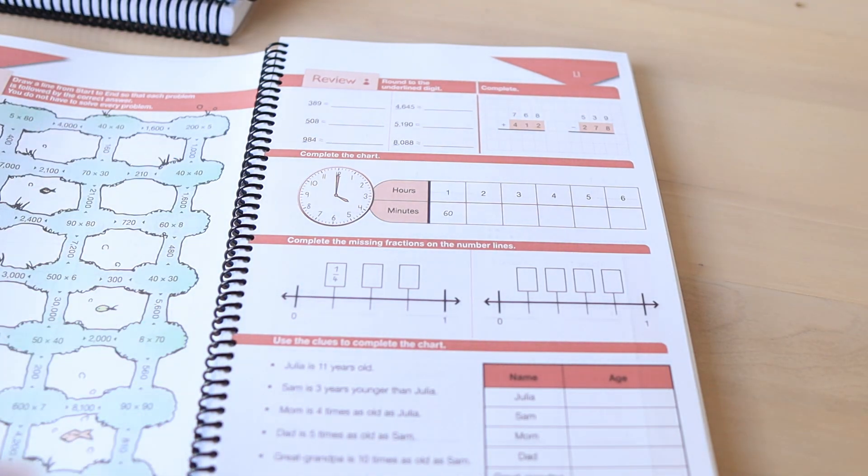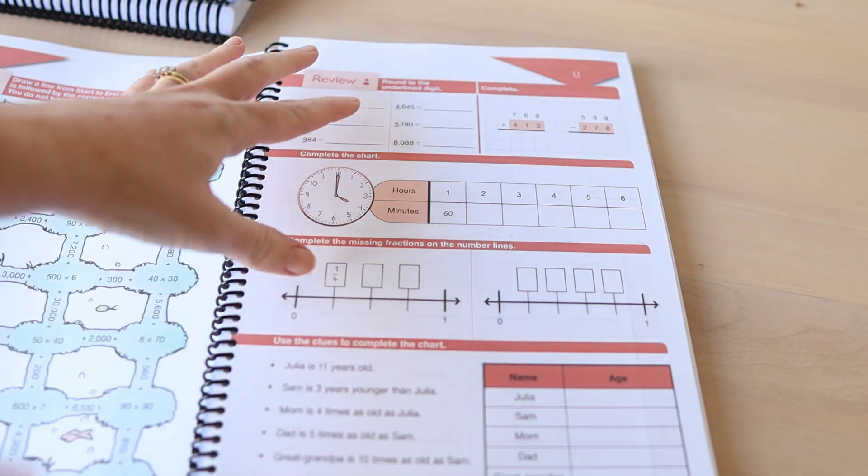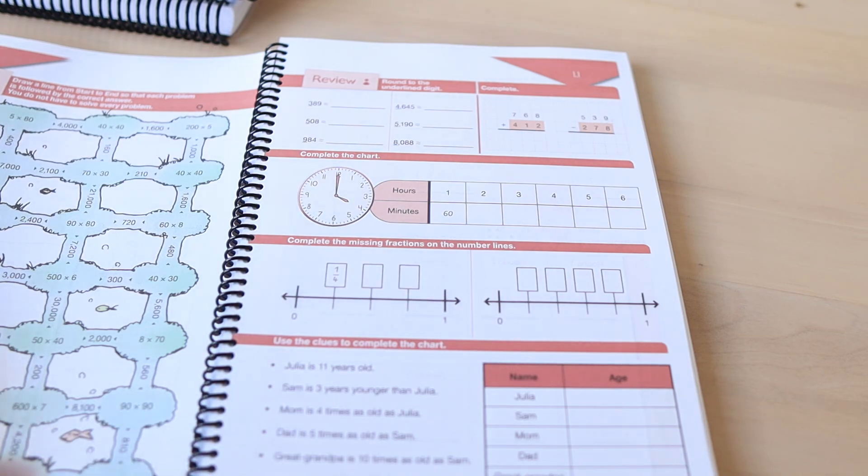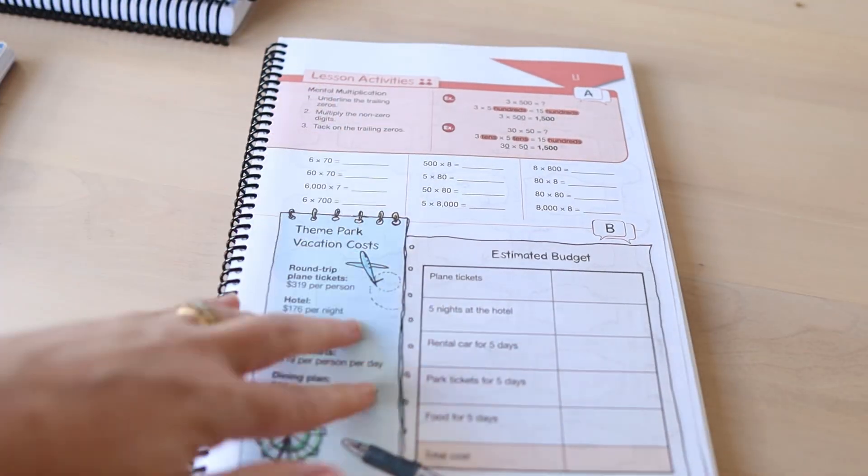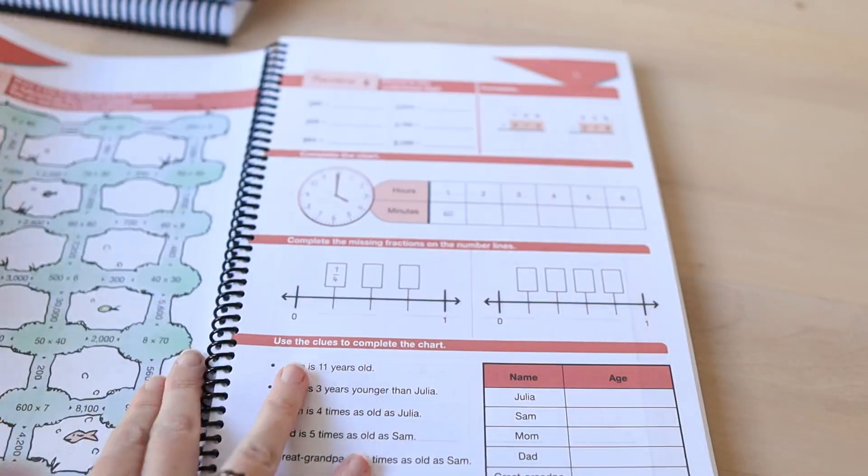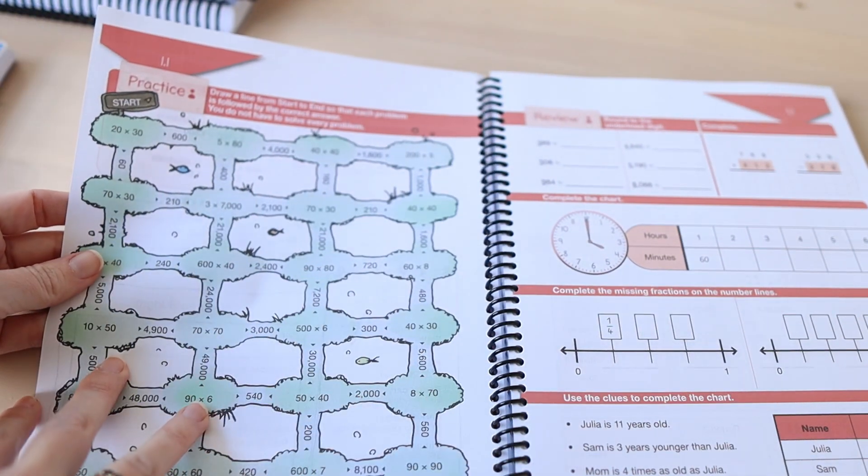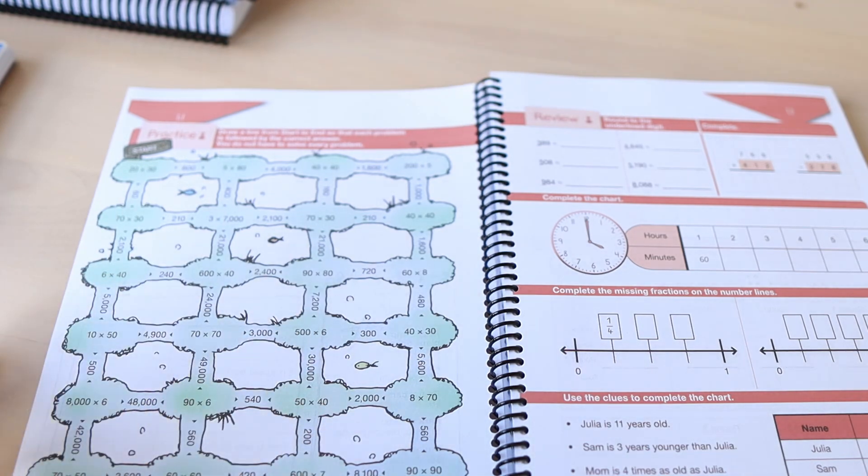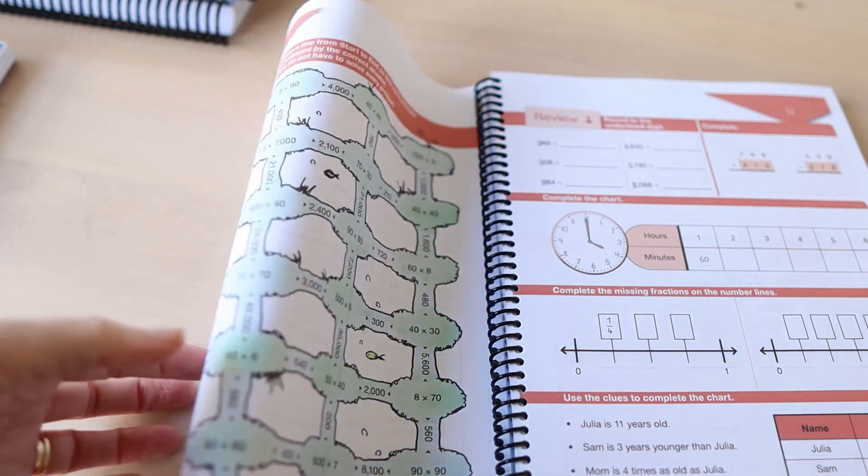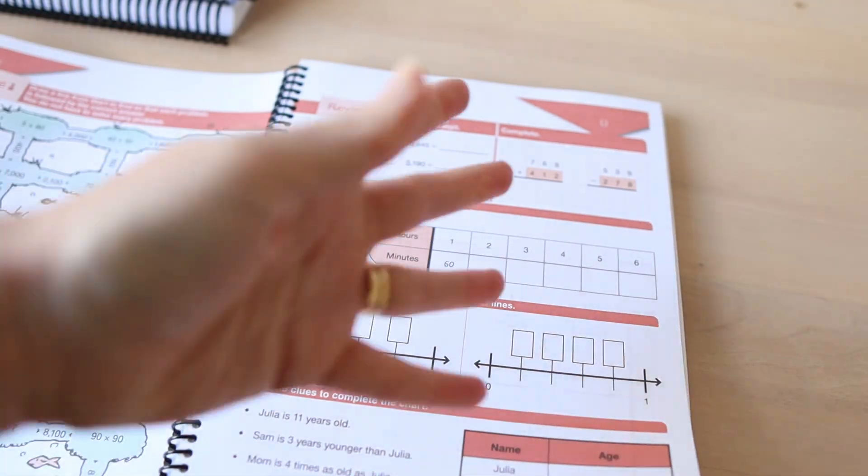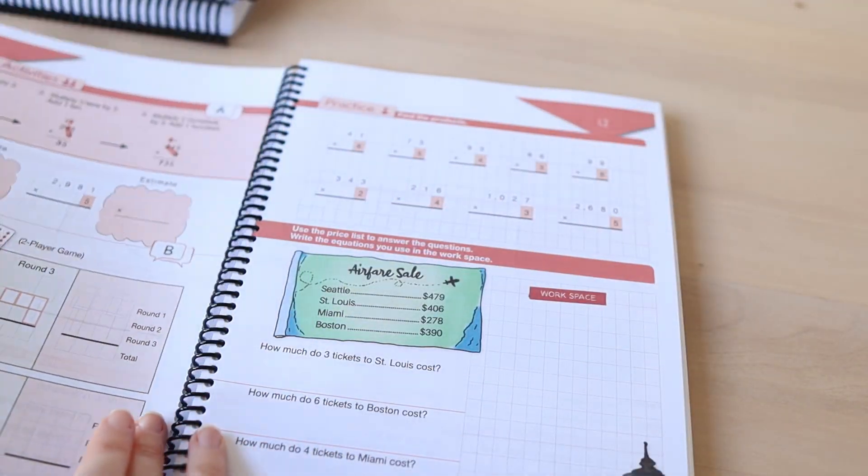The way that I do it with my children is we set up school in the morning and I work with my youngest who's in kindergarten. While I'm working with her, my two oldest do their review page in their math. Then when I get to them we do the lesson together. We usually break for morning tea and after morning tea they come back and they do their practice page. So it really helps to break up the lesson. They don't feel overwhelmed by doing a bunch of math problems altogether but also I feel like it helps to solidify the concepts in their brains.